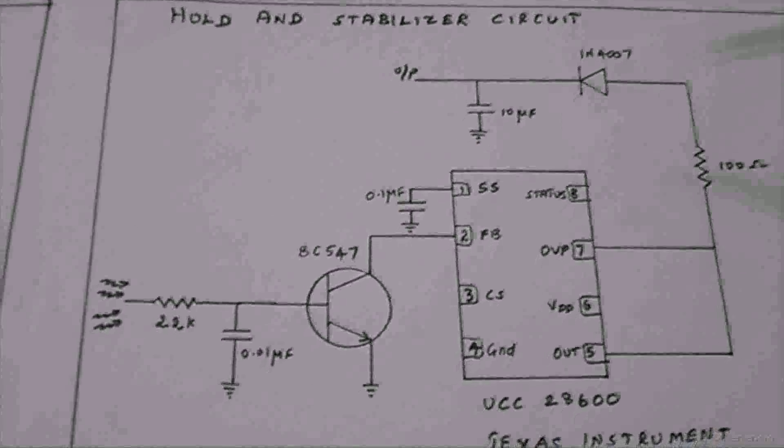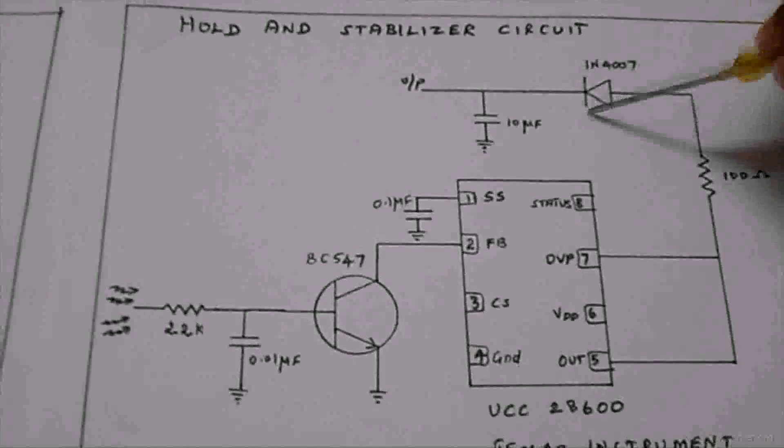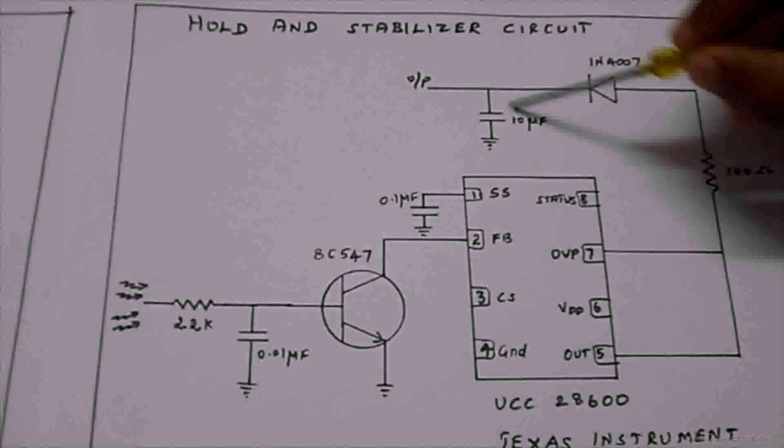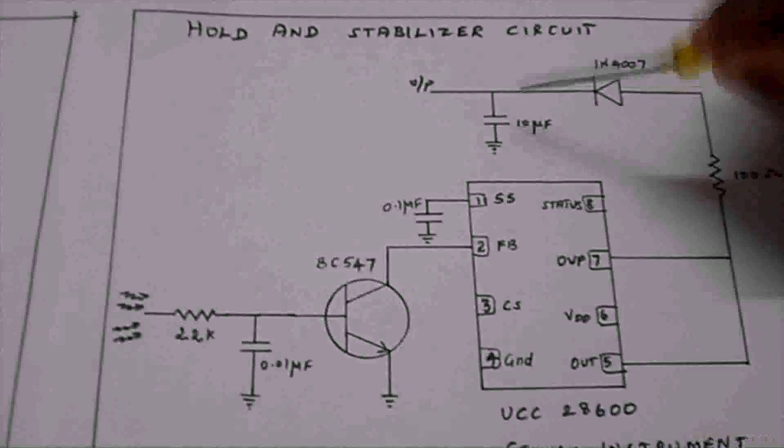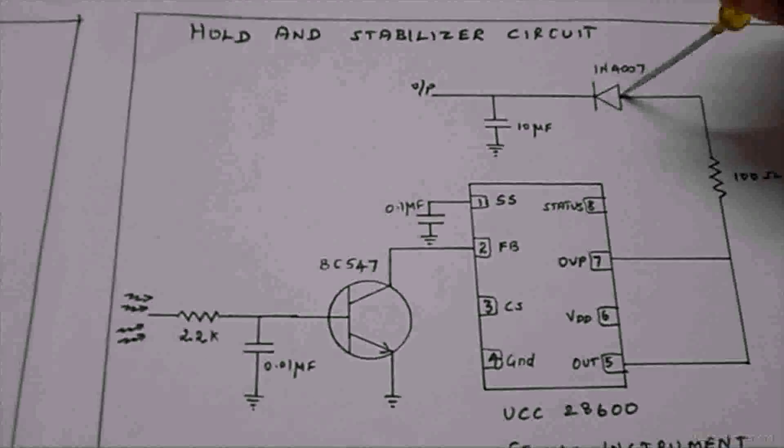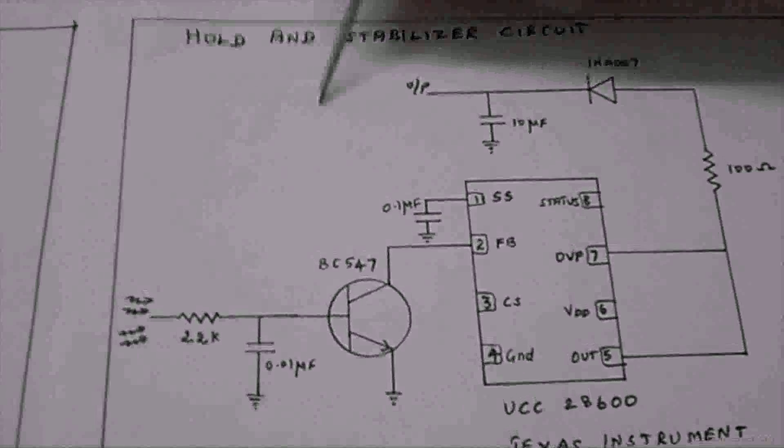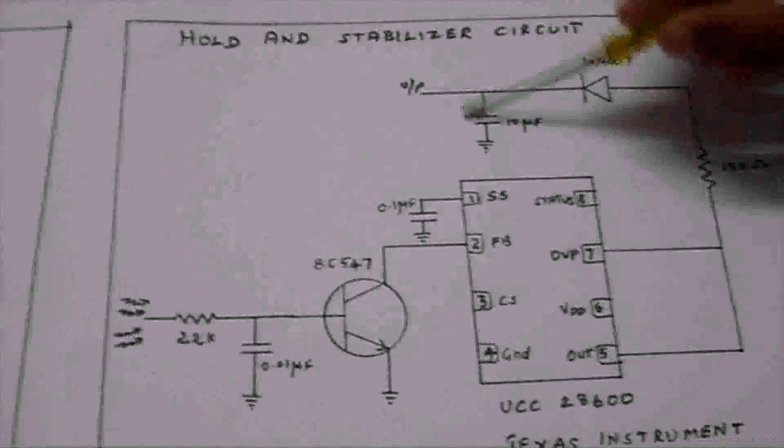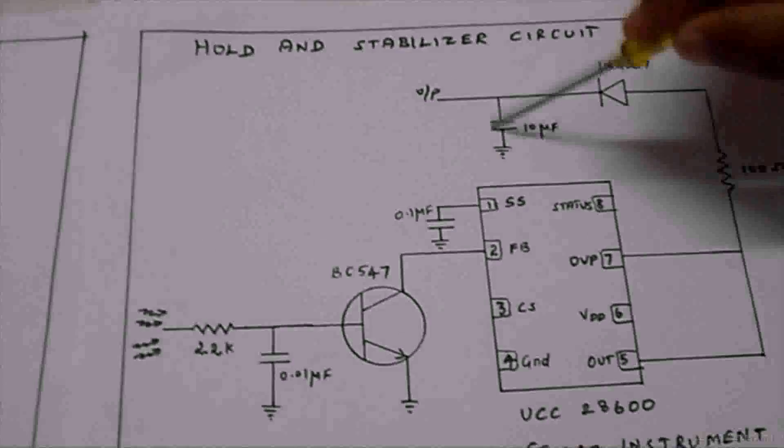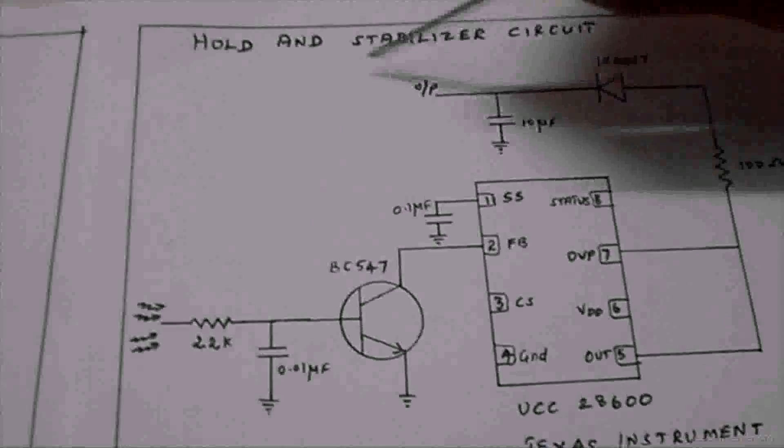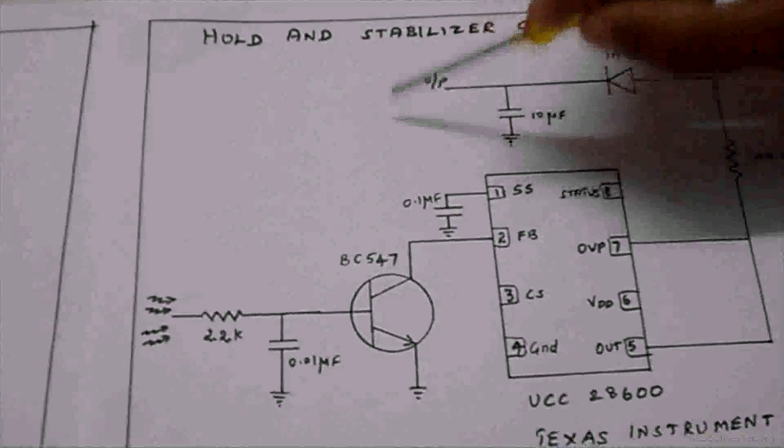The output will pass through the diode and be stored in the 10uF capacitor. The diode ensures that current direction is only in one direction. When we connect a charging device here, the charged capacitor will deliver its charge to the desired output device.